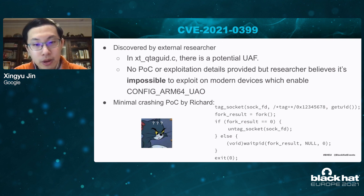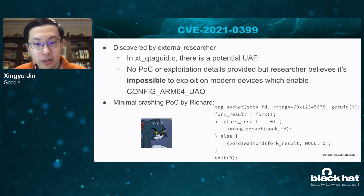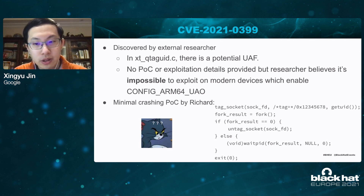When the bug was reported to Google, Richard quickly wrote a minimal PoC for a kernel crash. It's very simple: tag the socket, then untag the socket from a child process, exit the program, and the kernel crashes. So how is that possible?